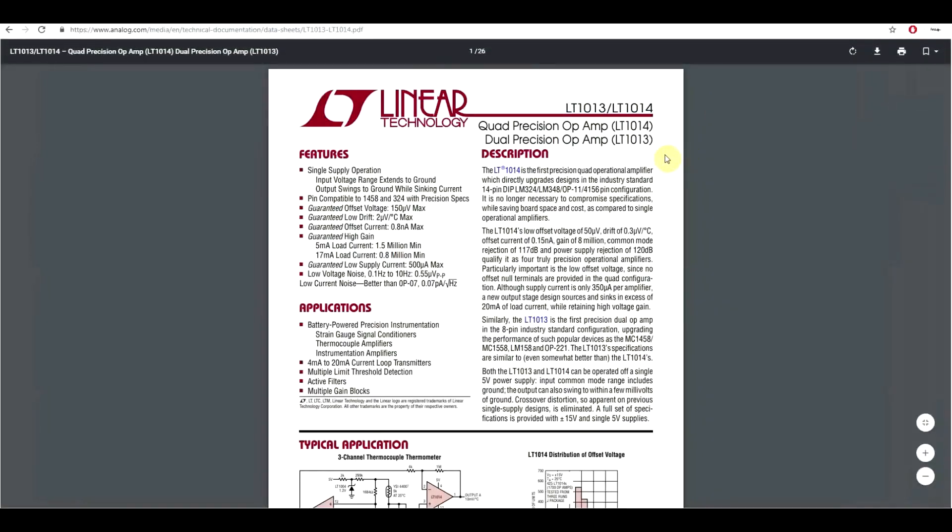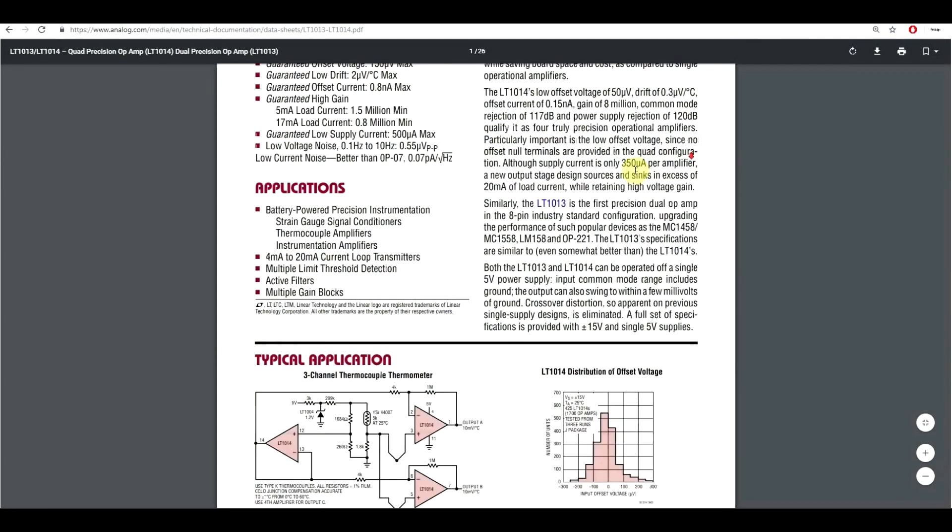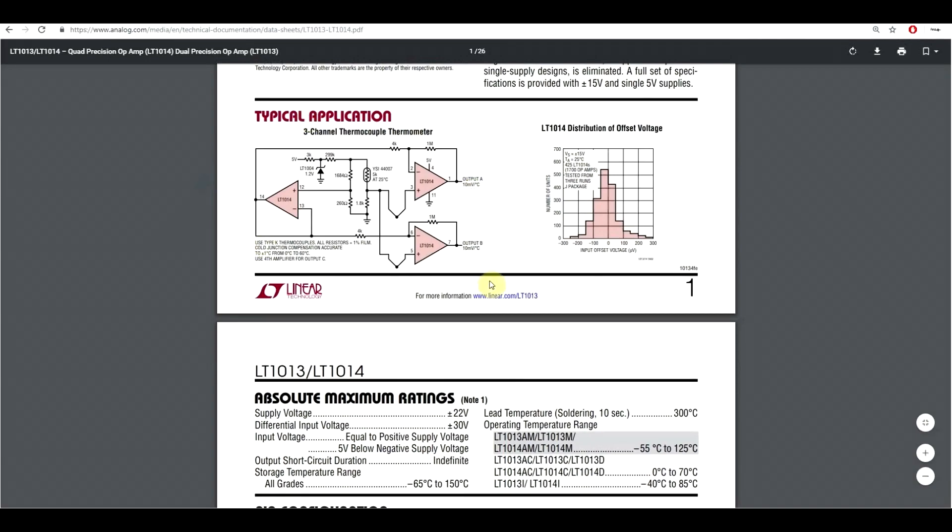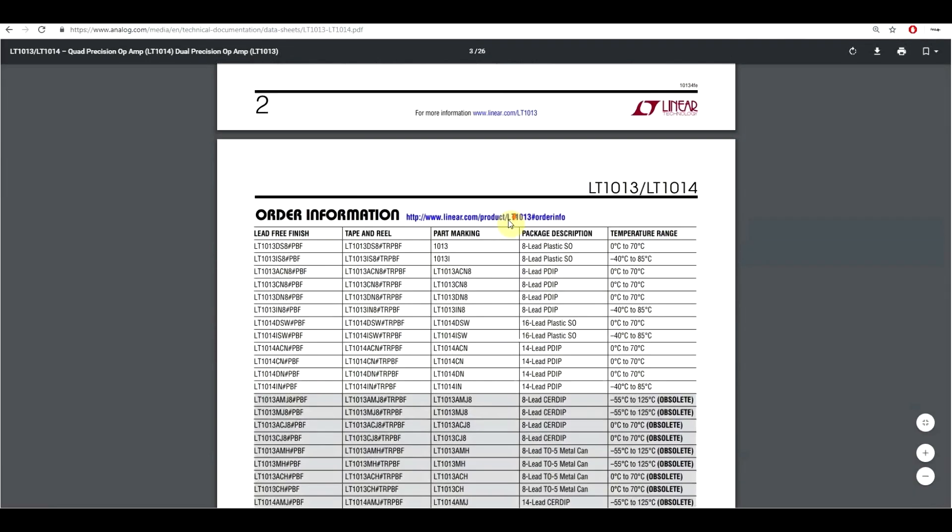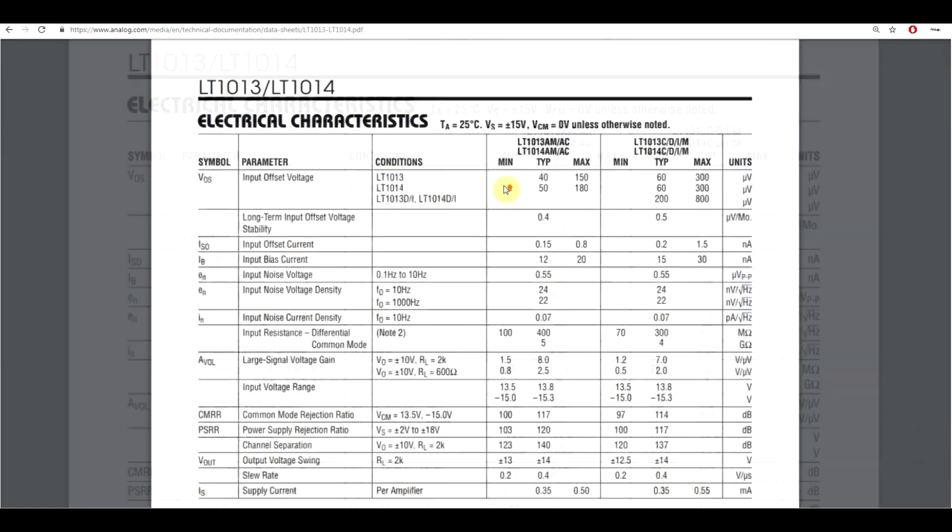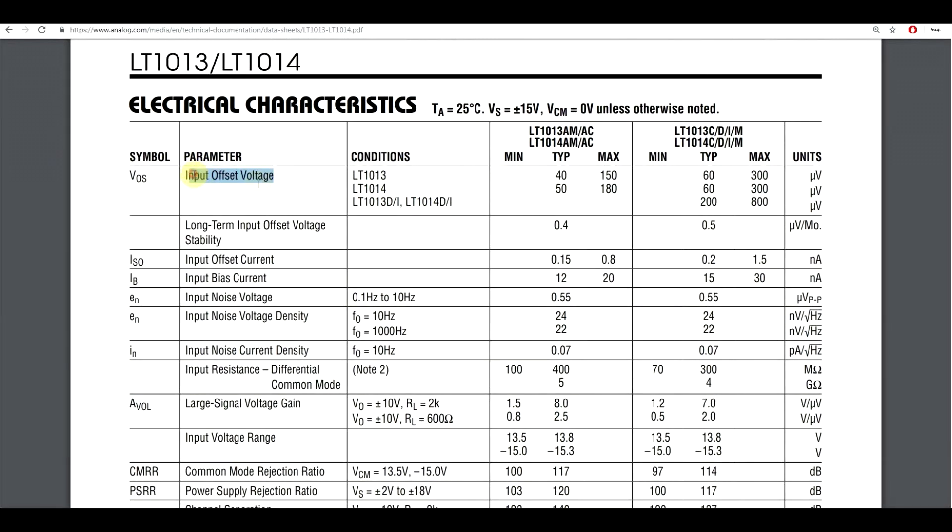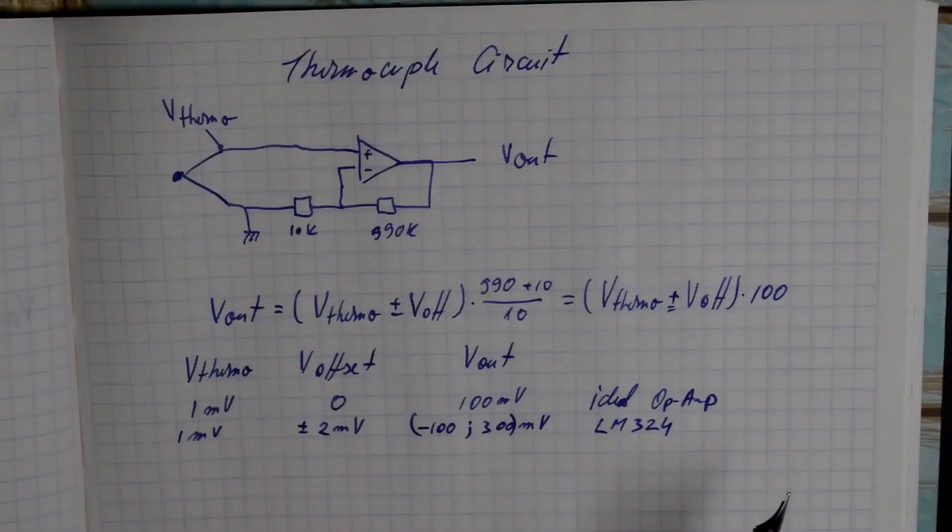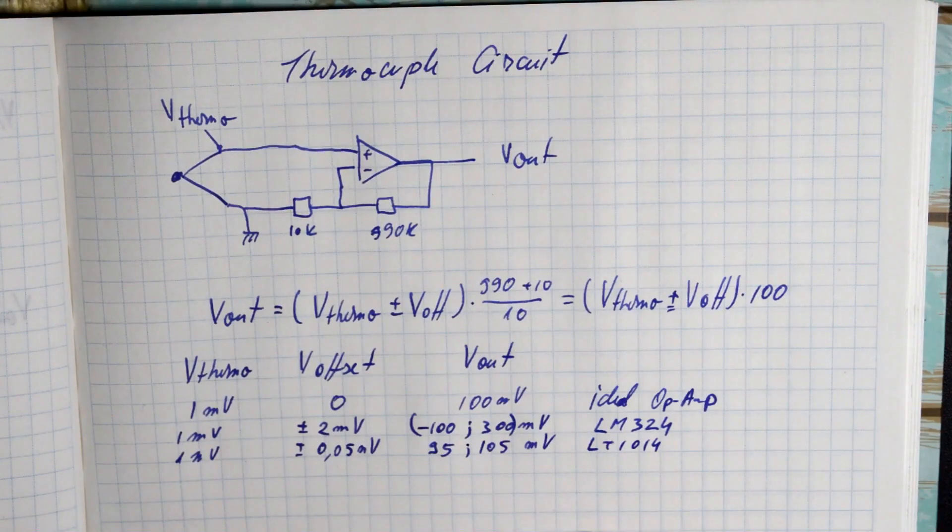So let's try one more op-amp, the LT1014. If we look in the datasheet, this one actually has a typical application with thermocouples, so it should be good. Well, let's just hope. Now for this IC, if we choose one of the first ones here in the upper part of the table, it has a typical offset of about 50 microvolts. So what will the amplifier output be this time? Well, if we do the math, it's somewhere between 95 and 105 millivolts. Or in other words, the LM324 is a good op-amp, but not for thermocouples or when very small voltages are involved. The LT is a much better choice.